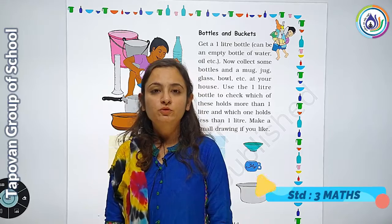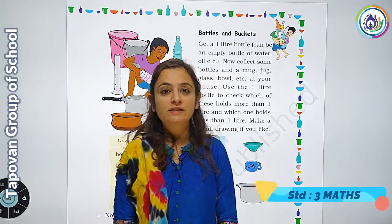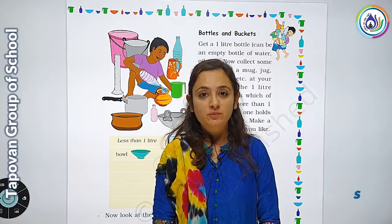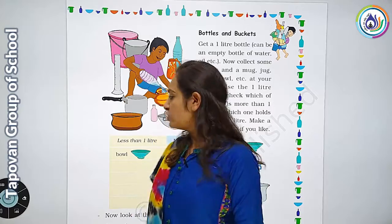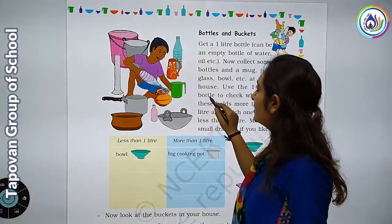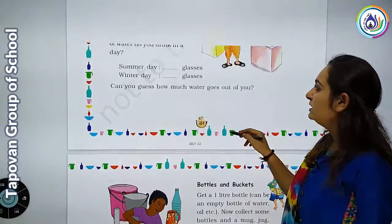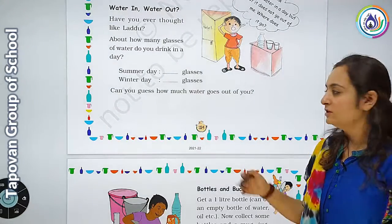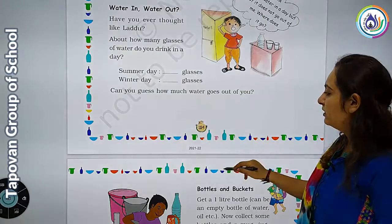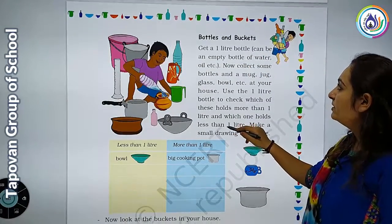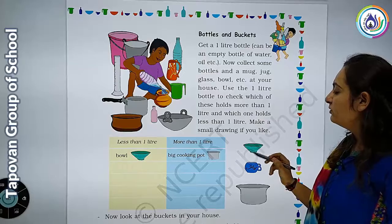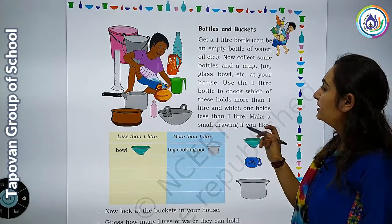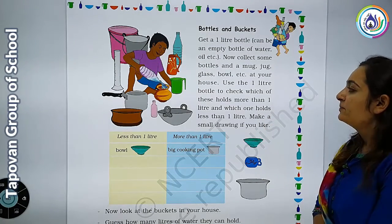Welcome students to the Pom group of schools, Standard Third. We will be working on our chapter Jogs and Mugs. Last session we had seen that you had to guess how much water you are going to drink. This is page 154, and now this is page 155, which is about bottles and buckets.